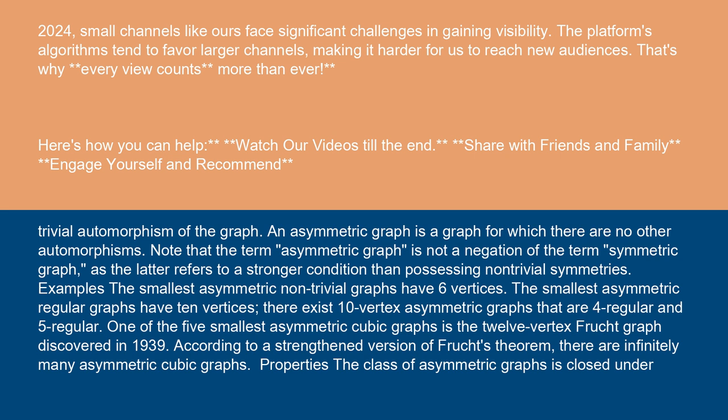The smallest asymmetric non-trivial graphs have six vertices. The smallest asymmetric regular graphs have ten vertices. There exist ten-vertex asymmetric graphs that are four-regular and five-regular. One of the five smallest asymmetric cubic graphs is the twelve-vertex Frucht graph, discovered in 1939. According to a strengthened version of Frucht's theorem, there are infinitely many asymmetric cubic graphs.